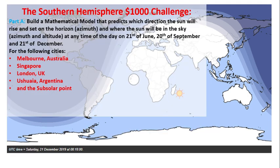So this is what my challenge will be. You need to build a mathematical model that predicts the direction the Sun will rise and set on the horizon, and where the Sun will be in the sky — the azimuth and the altitude — at any time of the day on the 21st of June, 20th of September, and 21st of December for the following cities: Melbourne, Australia.